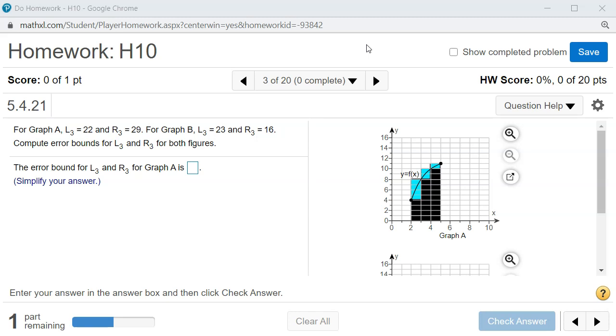All right, let's look at homework 10, problem number 3. So we want to find the error bound for left sum and right sum. So let's do that for graph A.